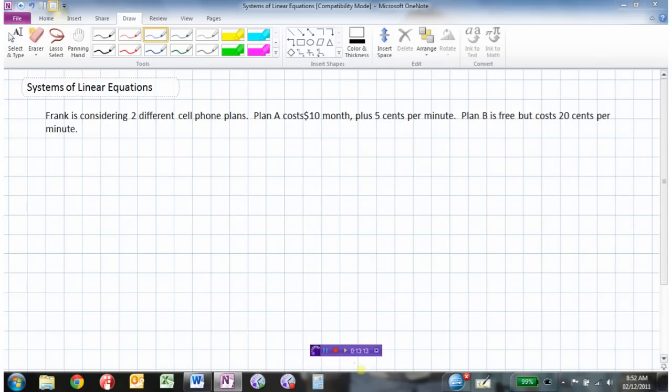Here's a word problem. Frank's considering two different cell phone plans. Plan A is going to cost him $10 a month as a monthly fee, plus 5 cents per minute for the call. Whereas Plan B is free, there's no upfront cost, but the calls are more expensive, 20 cents per minute.